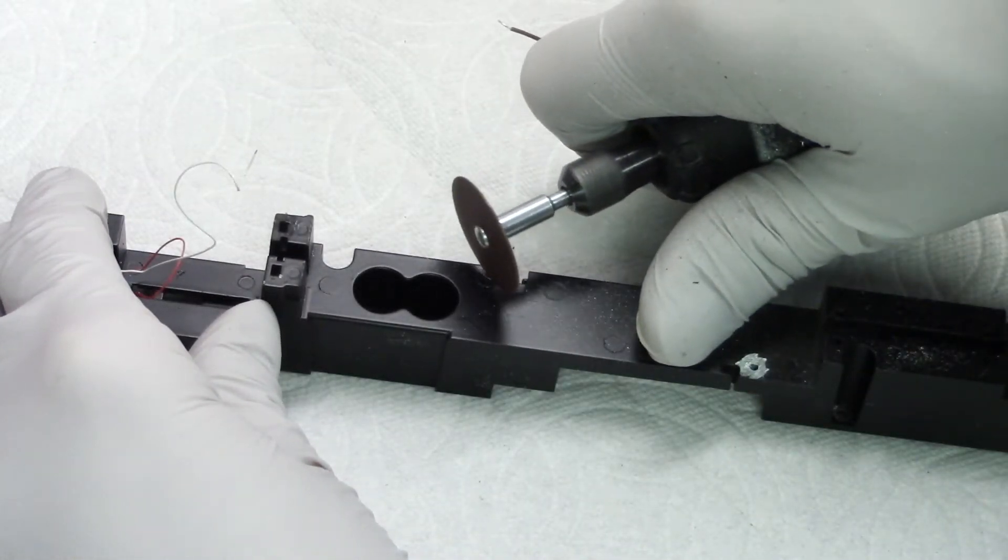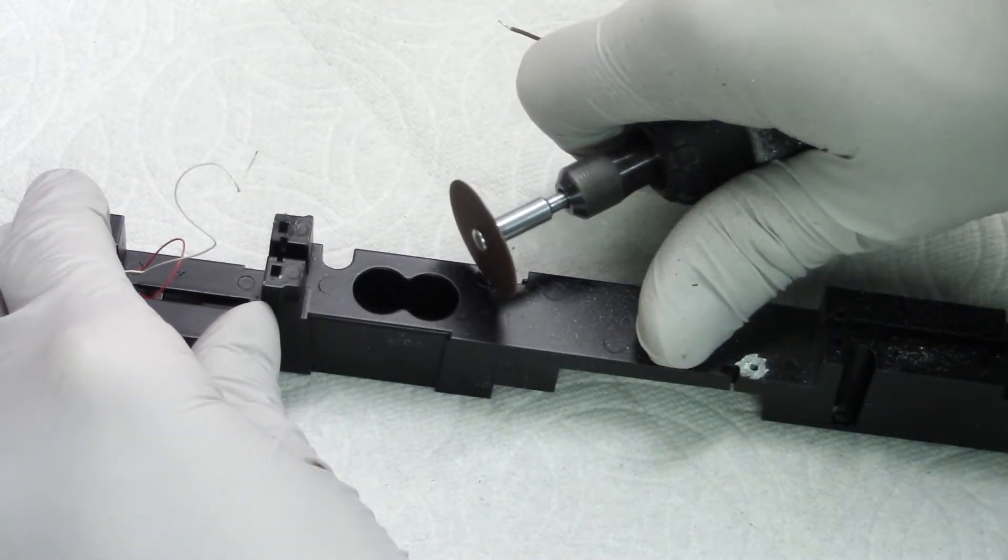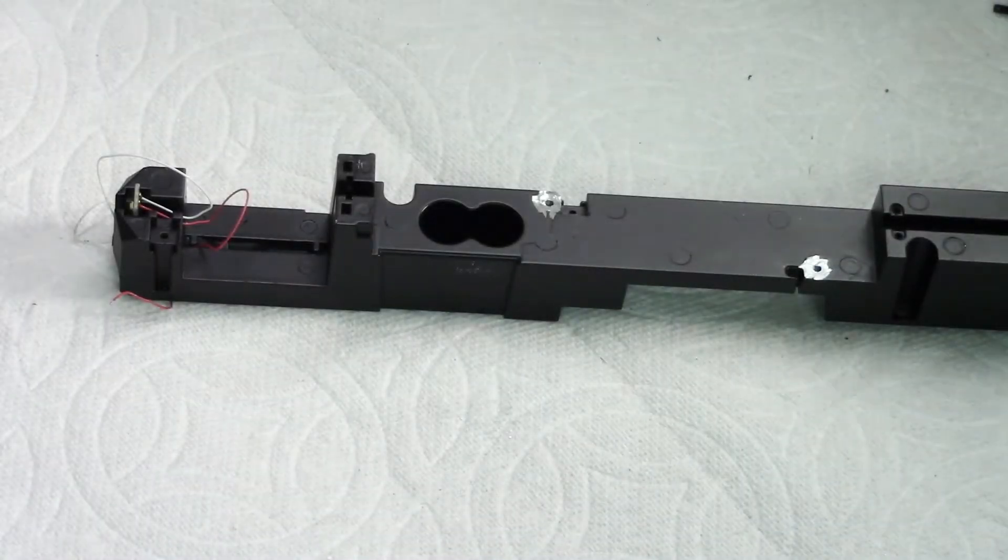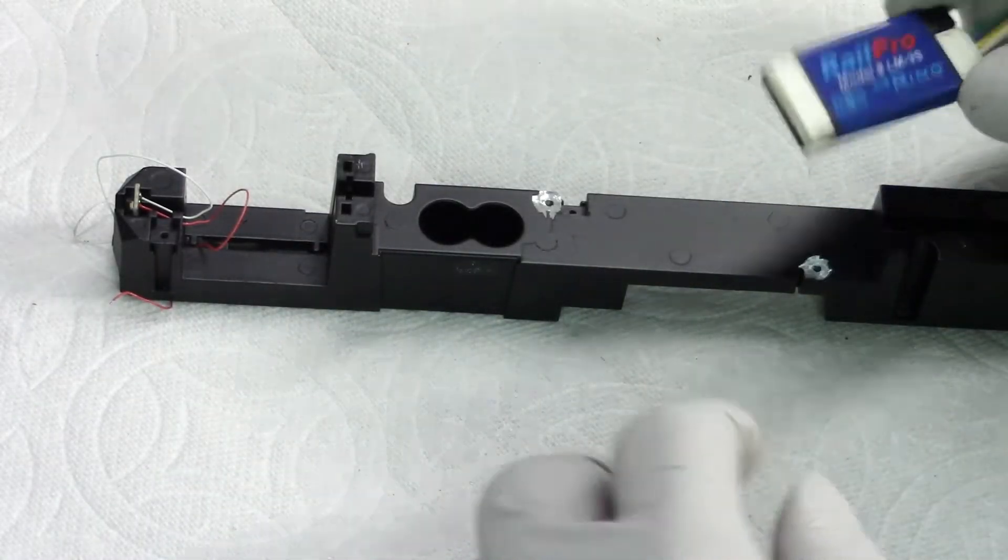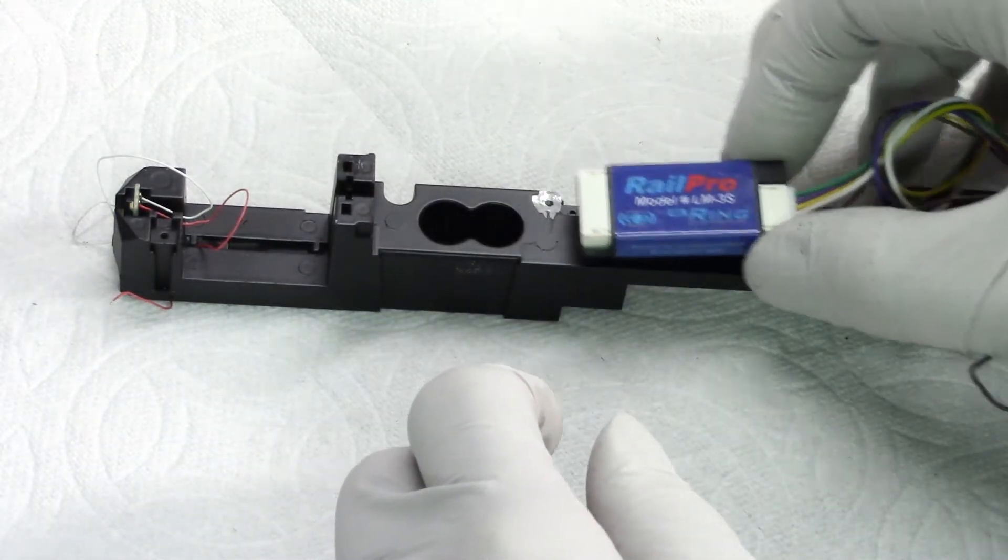So I used a Dremel tool with a cut-off wheel and carefully ground them down flat. At this point I took the RailPro module and figured out where I wanted it to sit and in which orientation.